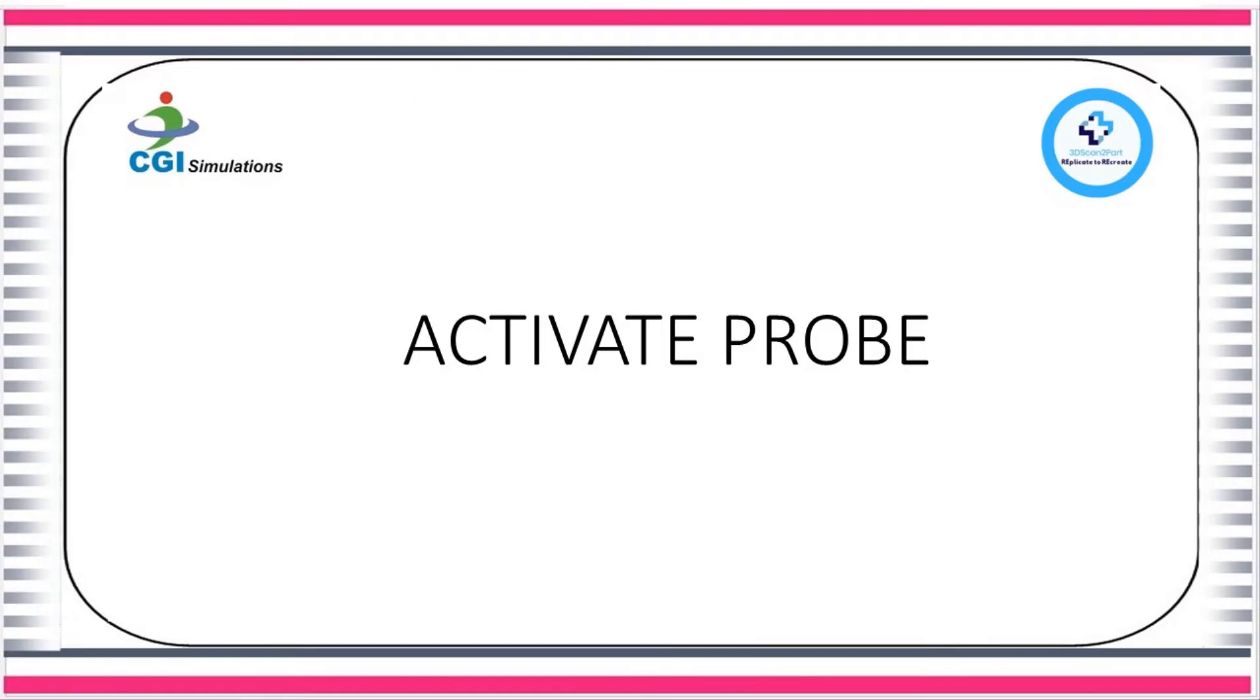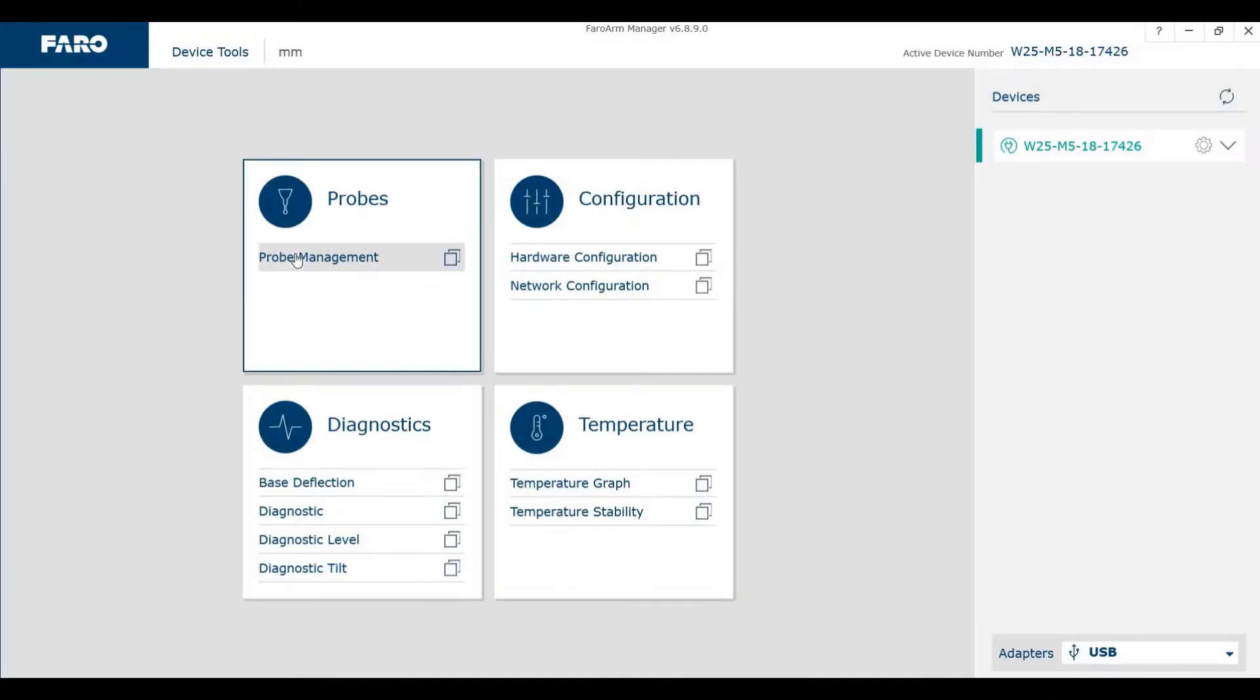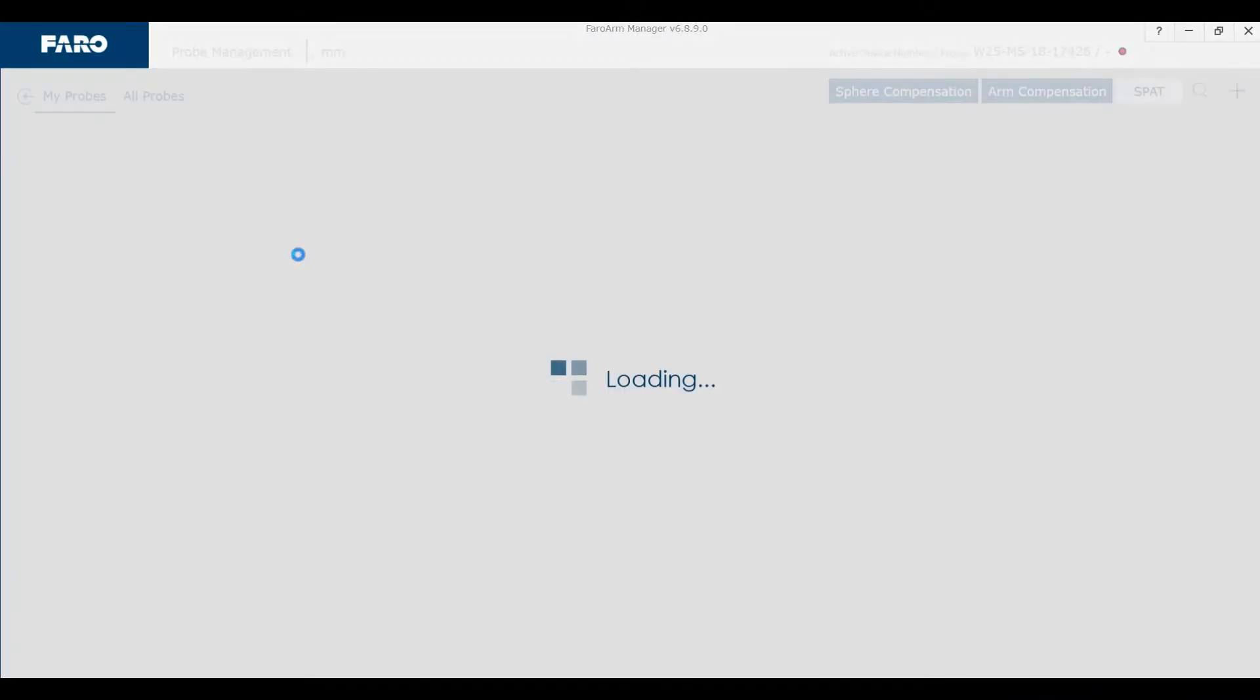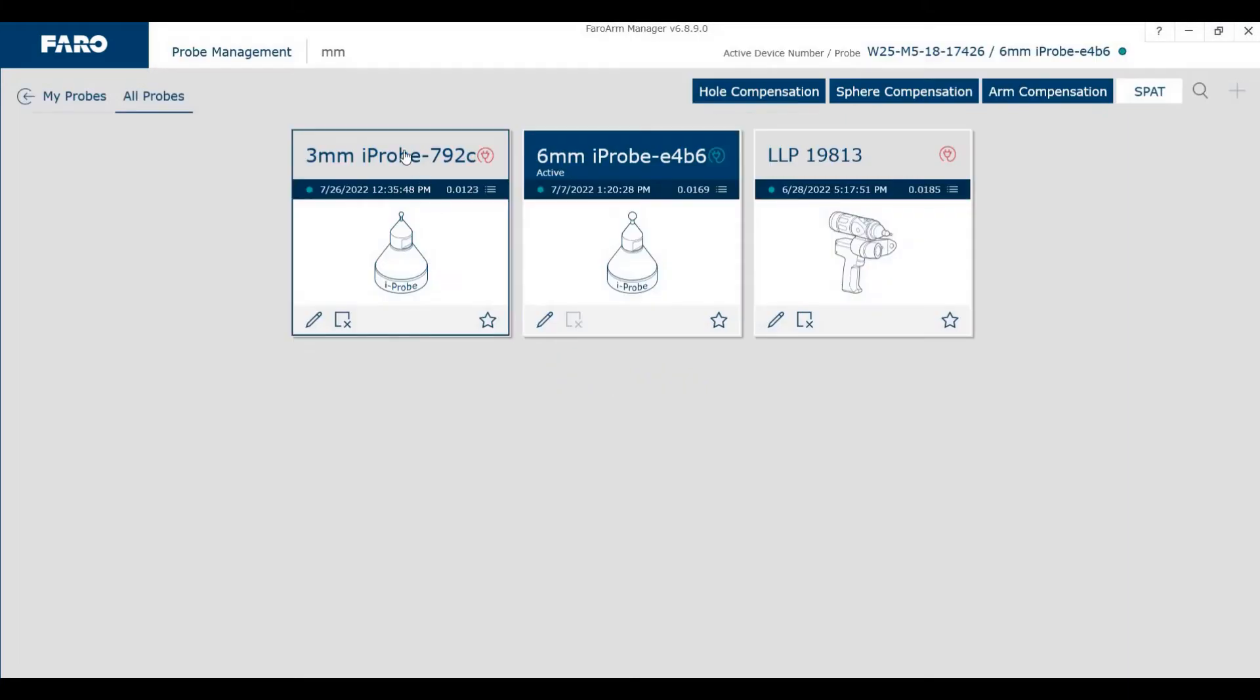On your laptop that is connected to the Faro arm go to the Faro arm manager and double click on the 6mm probe to activate it.